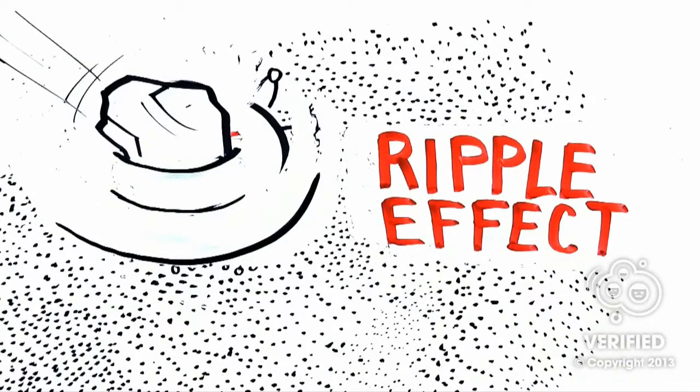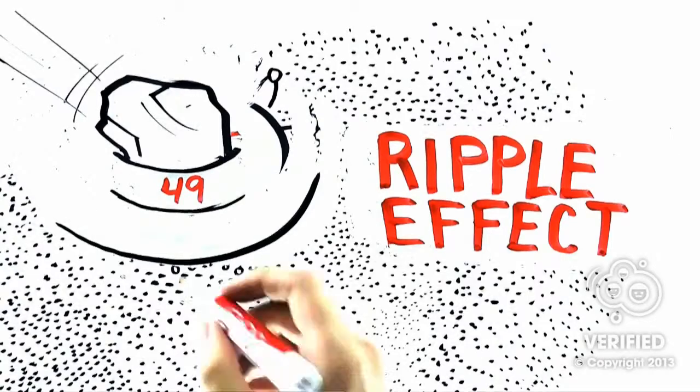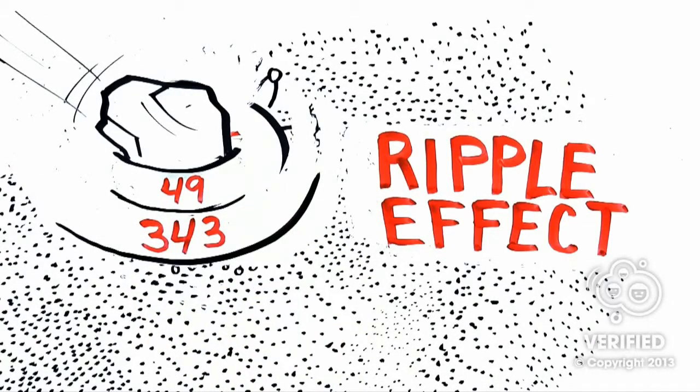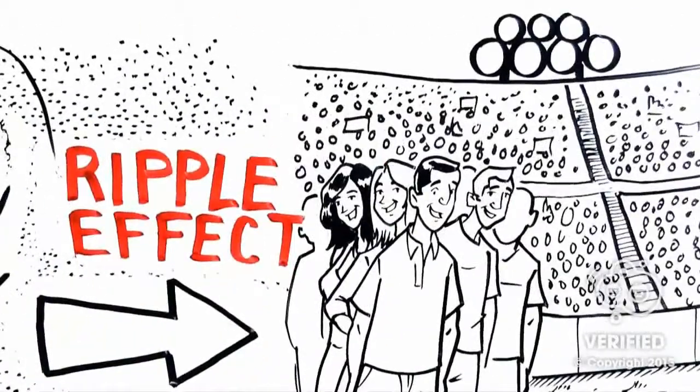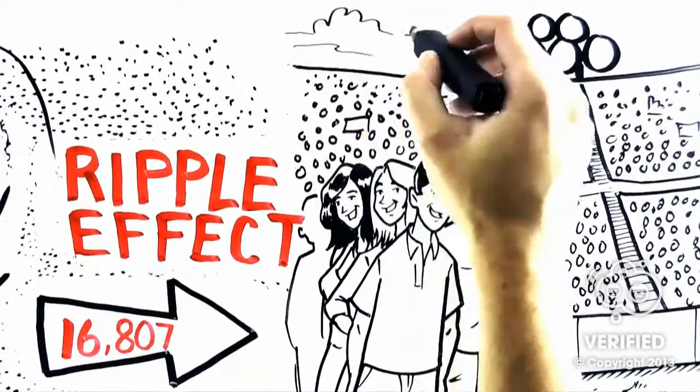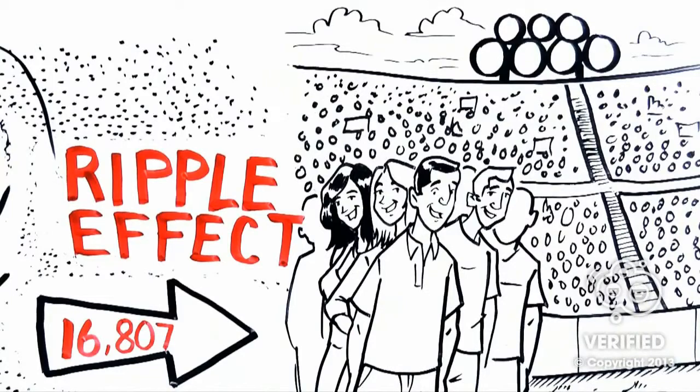Those 7 people you told quickly became 49 people by your second ripple, 343 people by your third ripple, 2,401 people by your fourth, and by your fifth level you had reached 16,807 people. And it keeps growing from there. And that's if you just told 7 people.